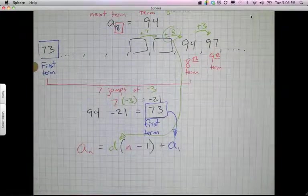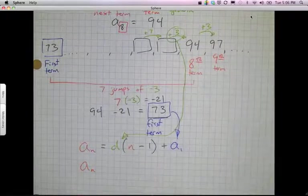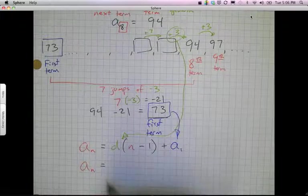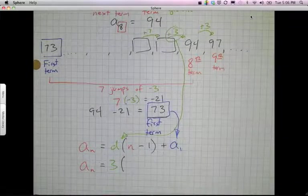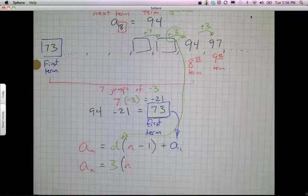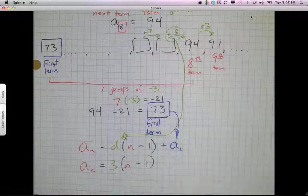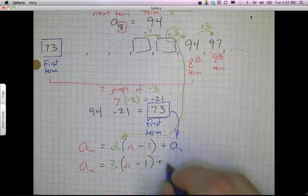So a sub n, whatever I want, is equal to my difference, which is 3, times the number that I want, which is n. That's my variable, so it can change depending on what I need, minus 1, plus the first term, which in this case is 73.